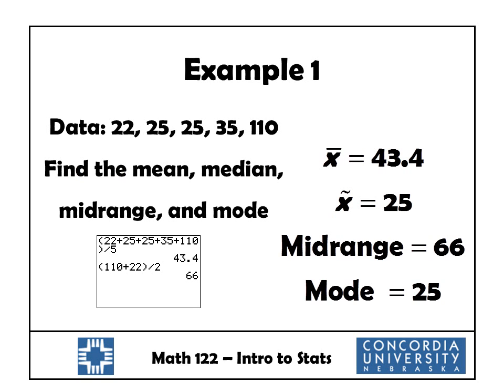Let's calculate the mean, median, midrange, and mode for our salary data. For x-bar, we add up all the values and divide by five. The calculator shows the mean is 43.4. For the median, we line up the numbers from smallest to largest — the middle value, the third one, is 25. So x-tilde equals 25.